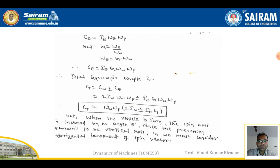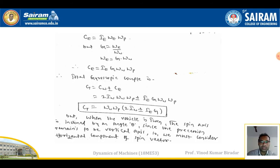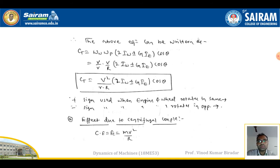When the vehicle turns, the spin axis is inclined by angle theta. Since the precession axis remains vertical, we must consider the horizontal component of the spin vector. The equation becomes: Ct = ωw·ωp·(2·Iw ± G·Ie)·cosθ. Substituting the angular velocity of the wheel as ωw = v/r and the precession angular velocity ωp = v/R, the total gyroscope couple is: Ct = (v²/r·R)·(2·Iw ± G·Ie)·cosθ.